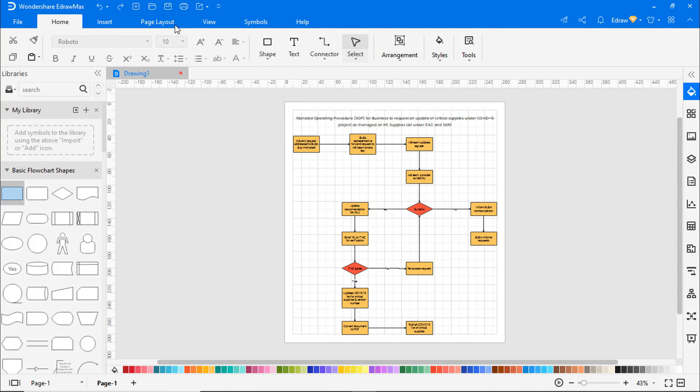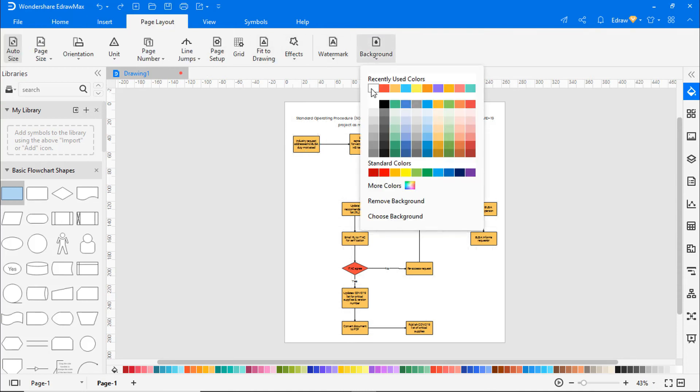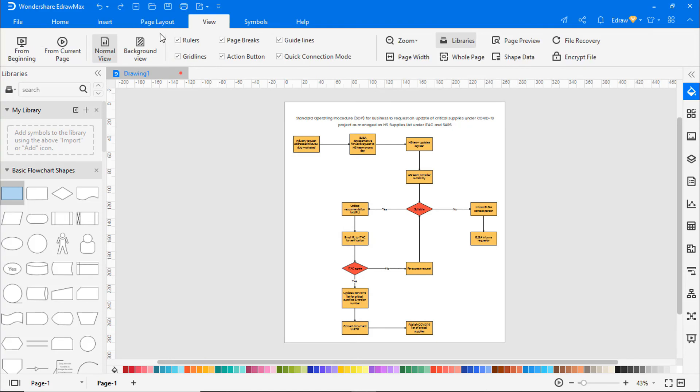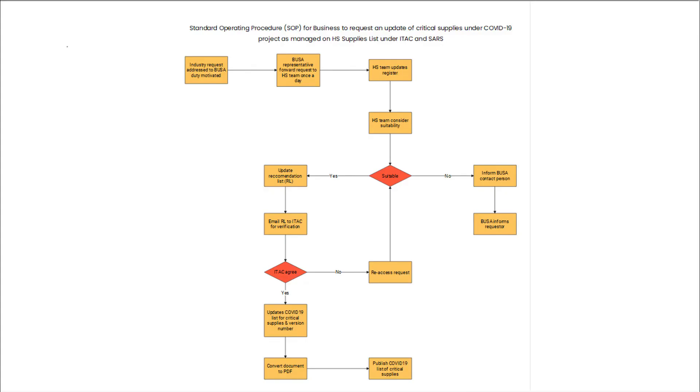Navigate to Page Layout and choose the white color under Background. Go to the View tab and click on the From Current Page icon to view the diagram in presentation mode.